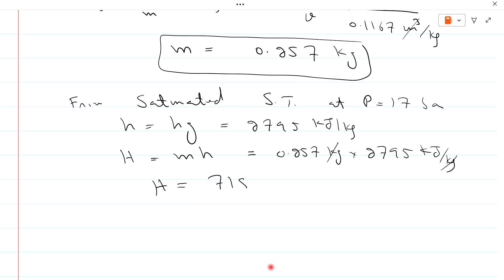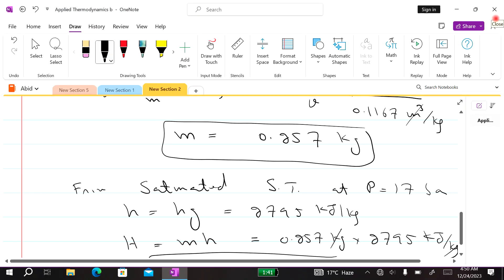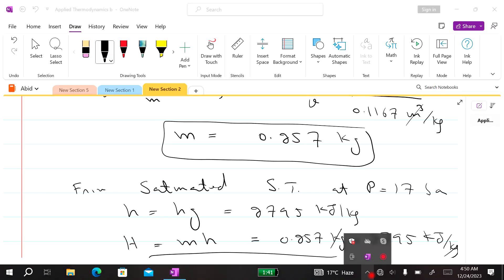kg will be cancelled with kg. And multiply these two values so the final answer will be 718.3 kilojoule. And this is the final result. And for more videos please like and subscribe my YouTube channel. Thank you.